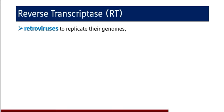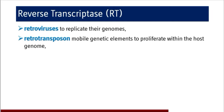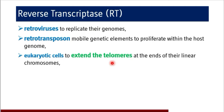Apart from that, there are various retrotransposons which are mobile genetic elements that proliferate within the host genome. Transposons are known as jumping genes. Retrotransposons also utilize reverse transcriptase enzyme to synthesize DNA and function as mobile genetic elements. Eukaryotic cells also utilize reverse transcriptase enzyme to extend the telomeres at the ends of their linear chromosomes.